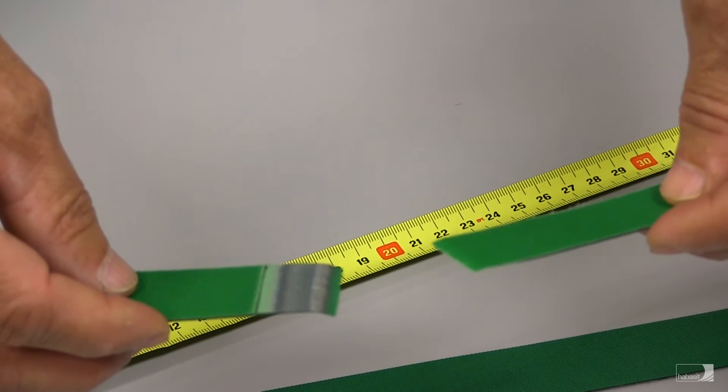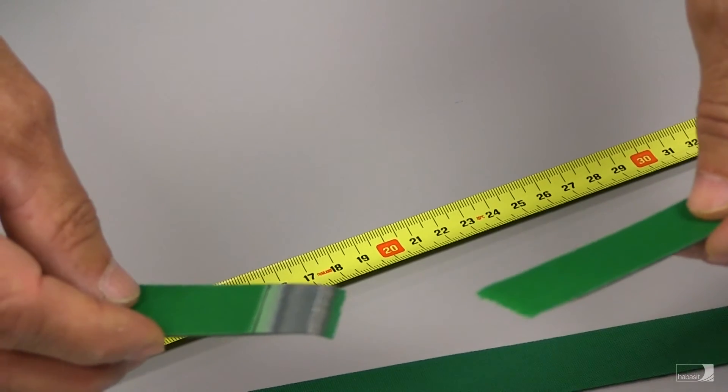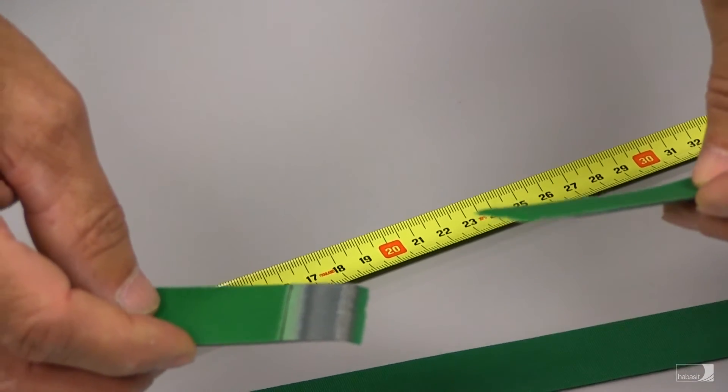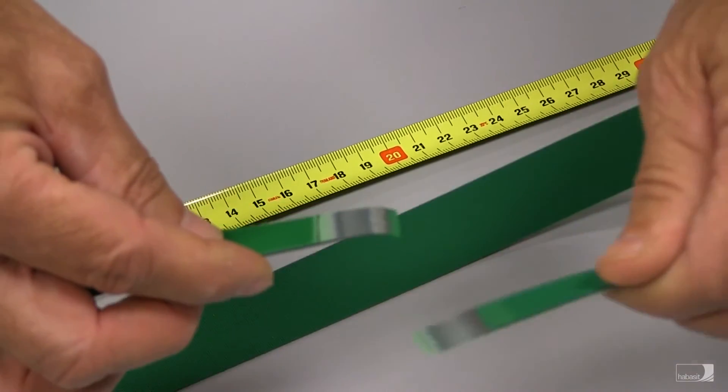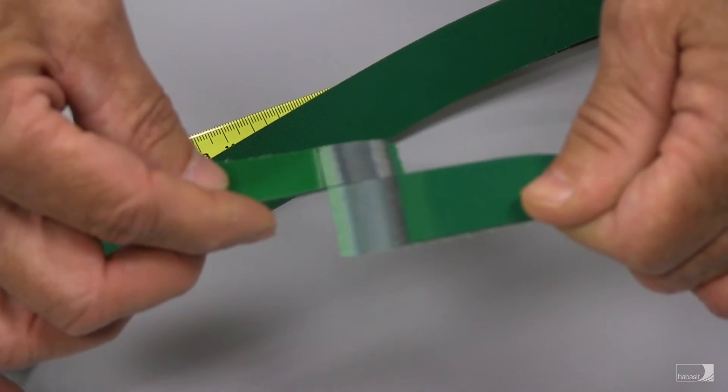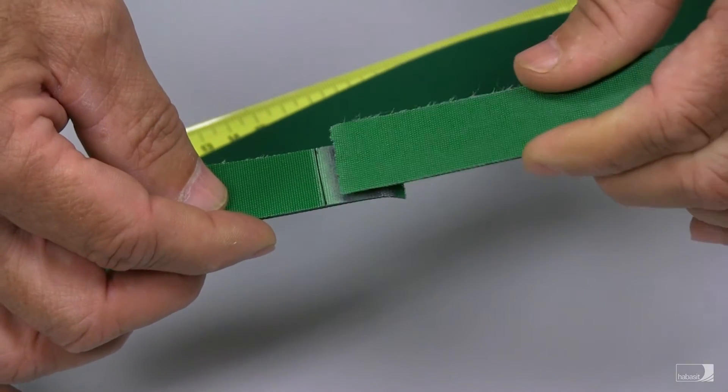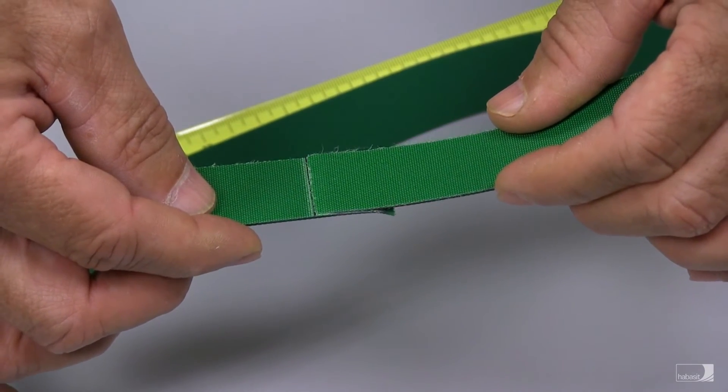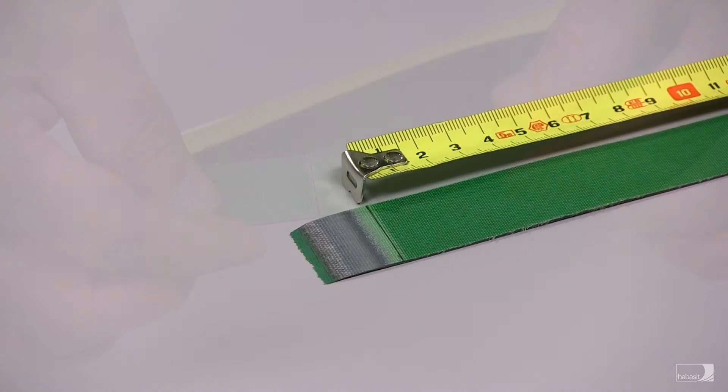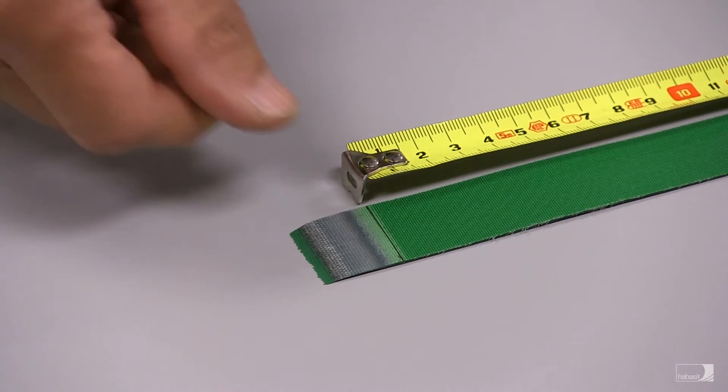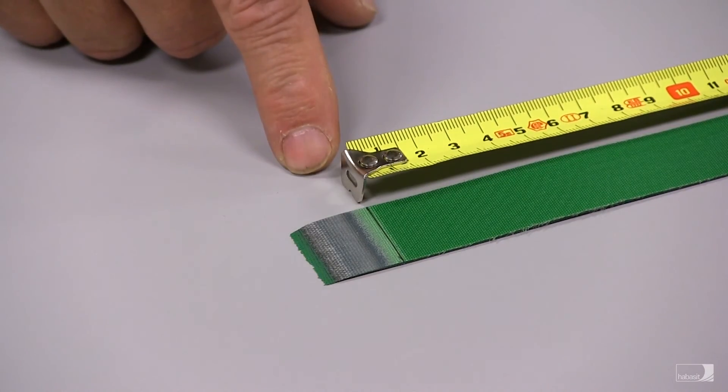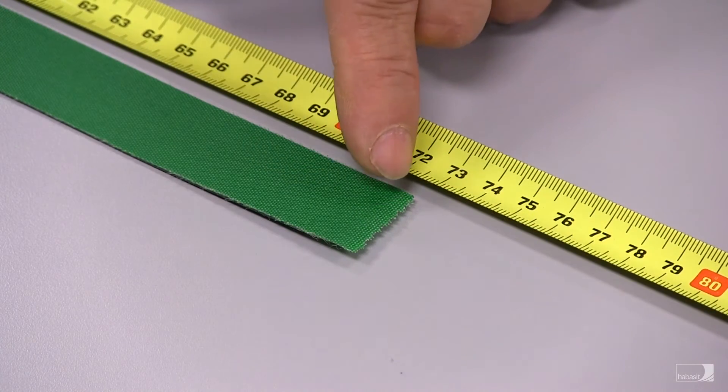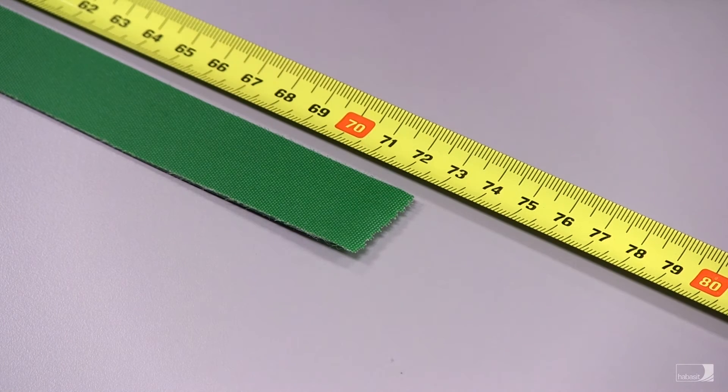For a Thermafix belt, skived ends prepared, you have to take into account the overlap of the belt when measuring the length of the belt. The layers match and a match line is applied at the top of the skive on one end of the belt. And so to measure the net endless length of a skived end prepared belt, we start at the match line at the top of the skive on one end of the belt, and measure down all the way to the tip end on the opposite end of the belt.